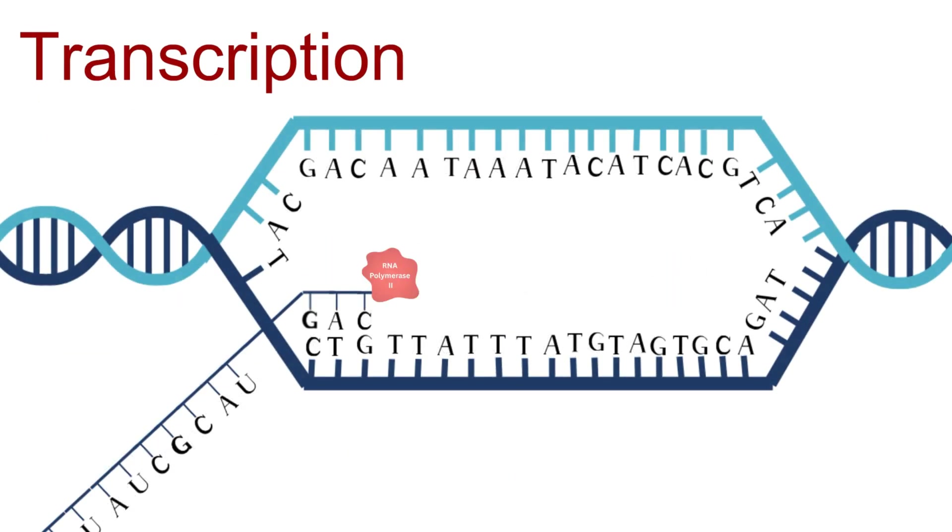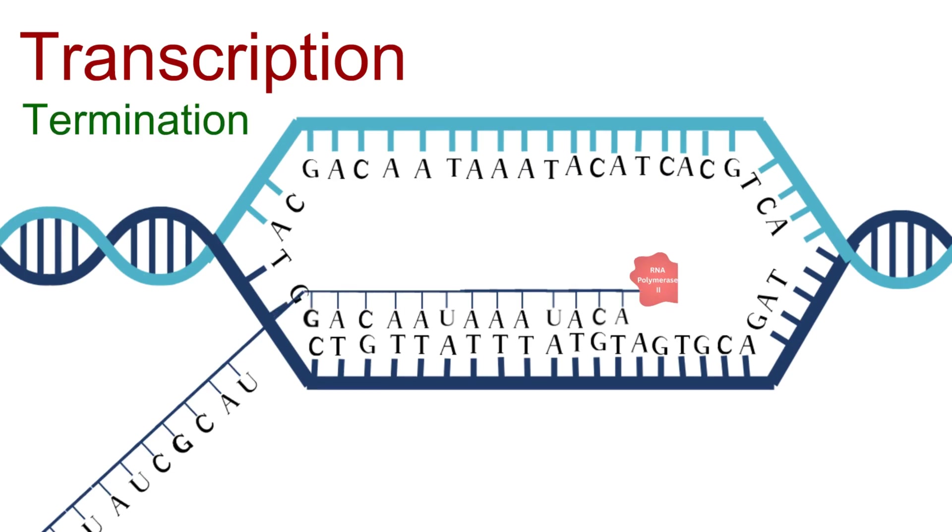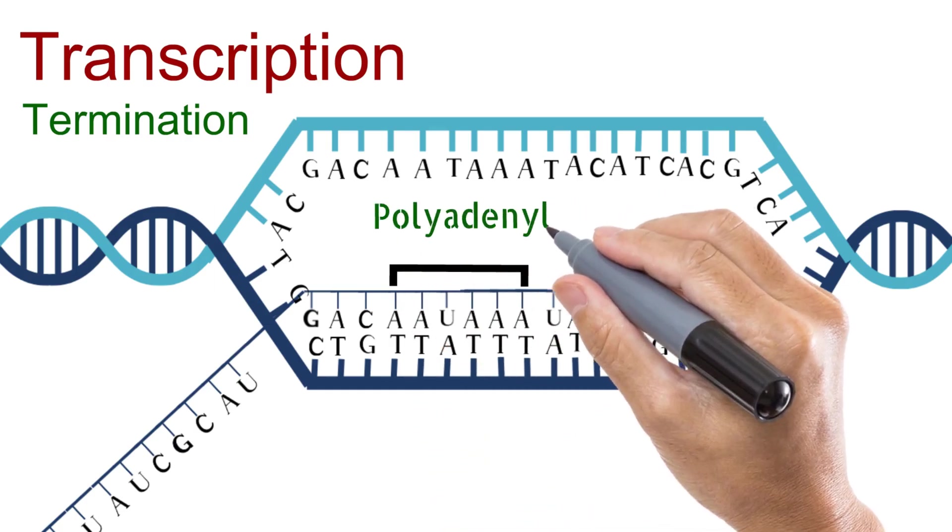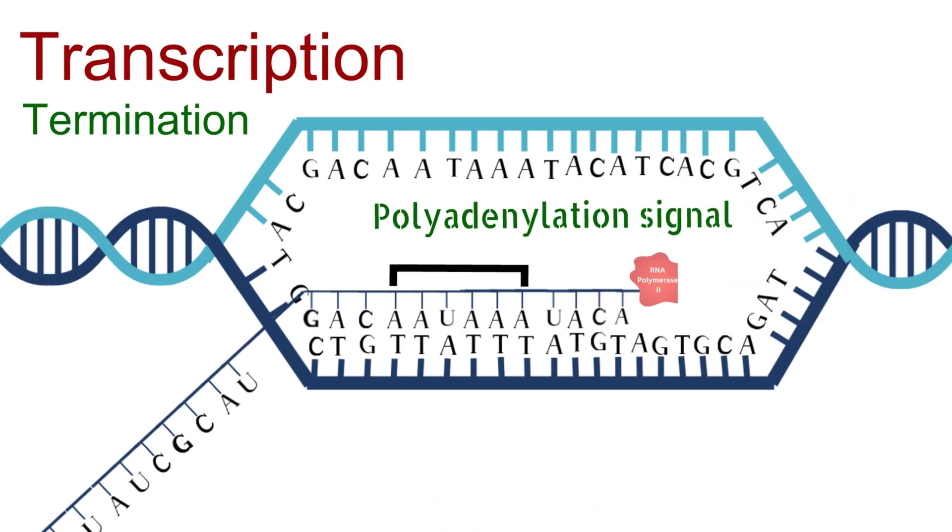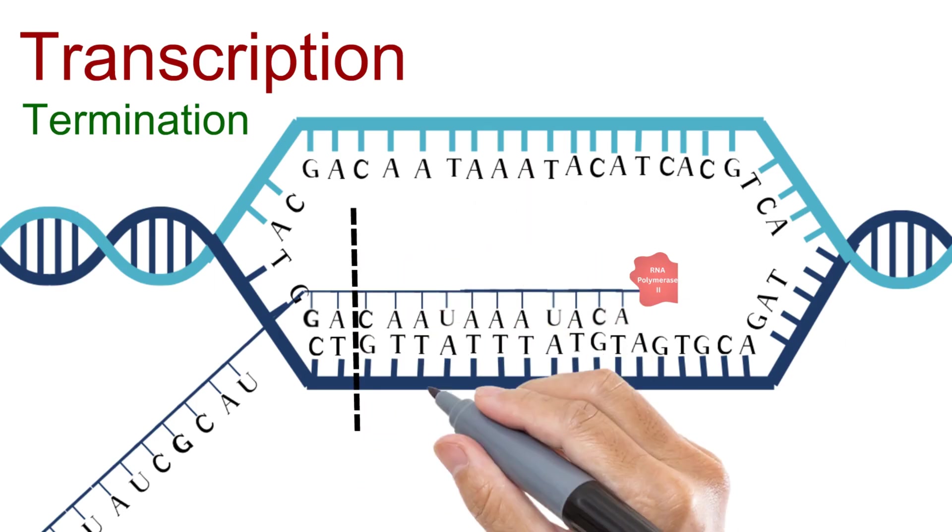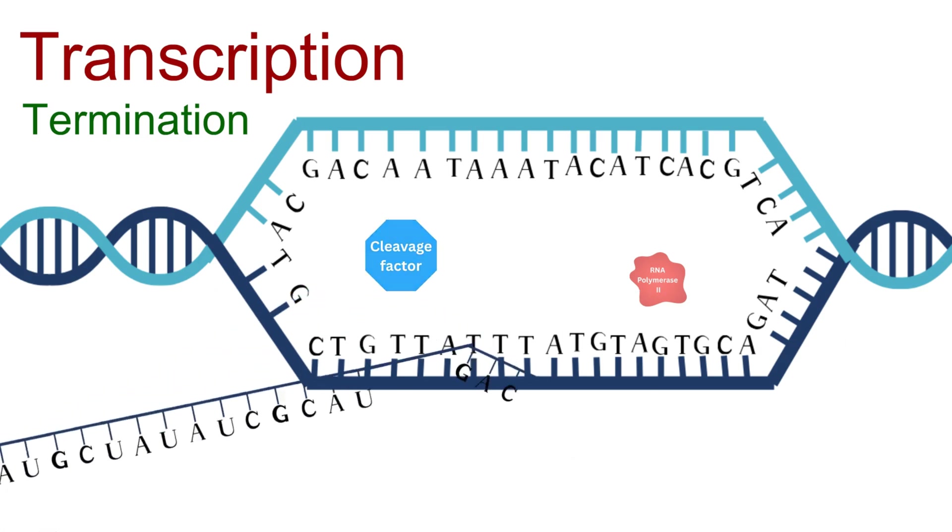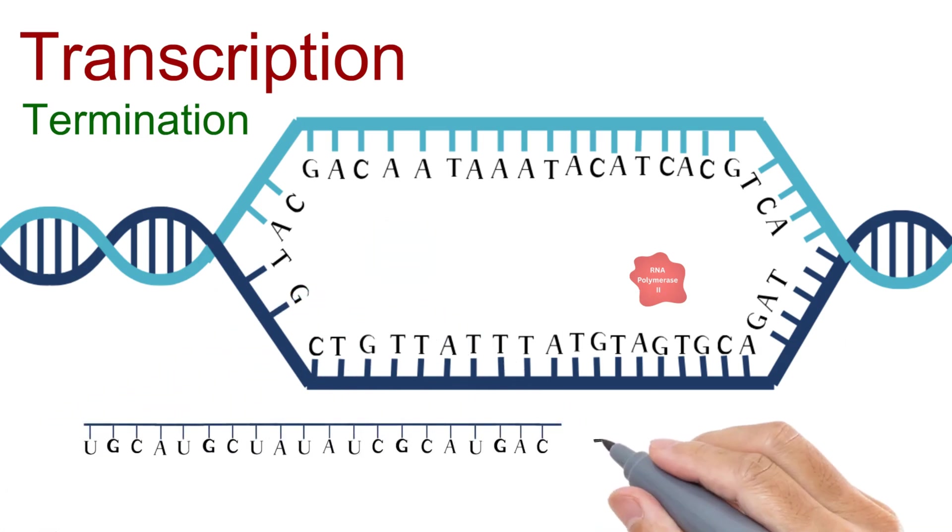Once RNA polymerase 2 finishes copying the gene, it doesn't stop immediately. Instead, it keeps moving forward, transcribing extra bases beyond the coding region, almost like a typewriter that keeps pressing keys even after the sentence has ended. But within this extra stretch lies an important signal: a short sequence in the RNA called the polyadenylation signal, and it tells the cell the useful part of the transcript ends around here. At this stage, proteins called cleavage factors step in. They recognize the signal and cut the RNA strand just a little downstream. This separates the fresh RNA transcript from the polymerase.